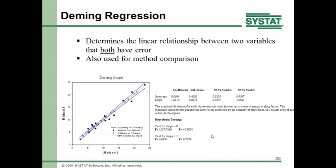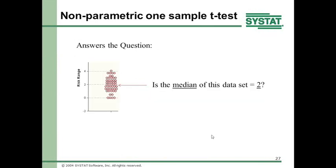The nonparametric one-sample t-test was something that had been left out. It determines whether the median of your data is equal to some number known beforehand — from some other experiment. You want to know whether the median of the new experiment is or is not equal to that particular value.